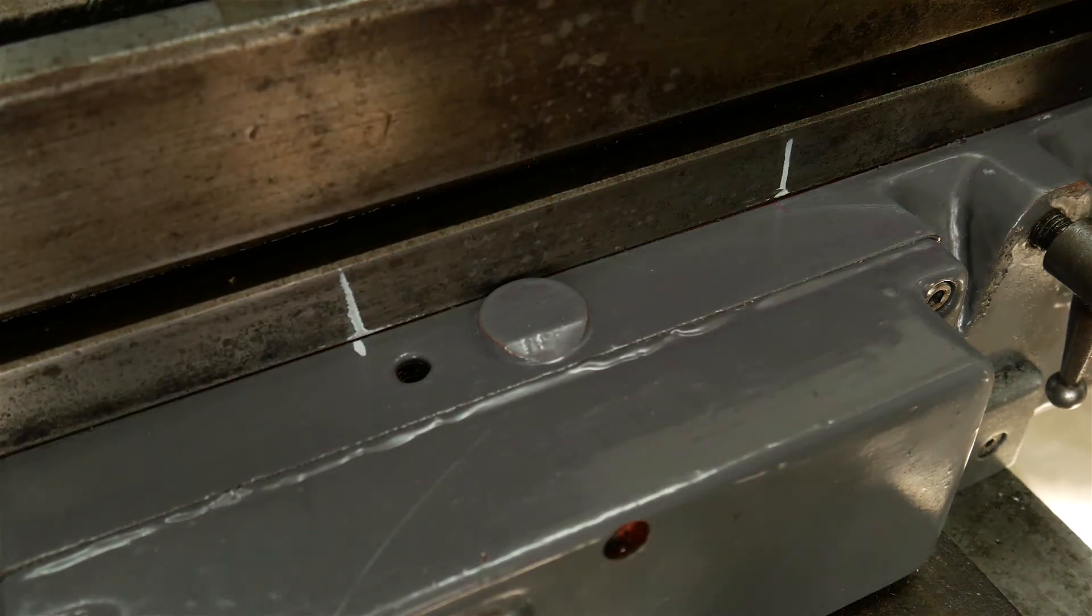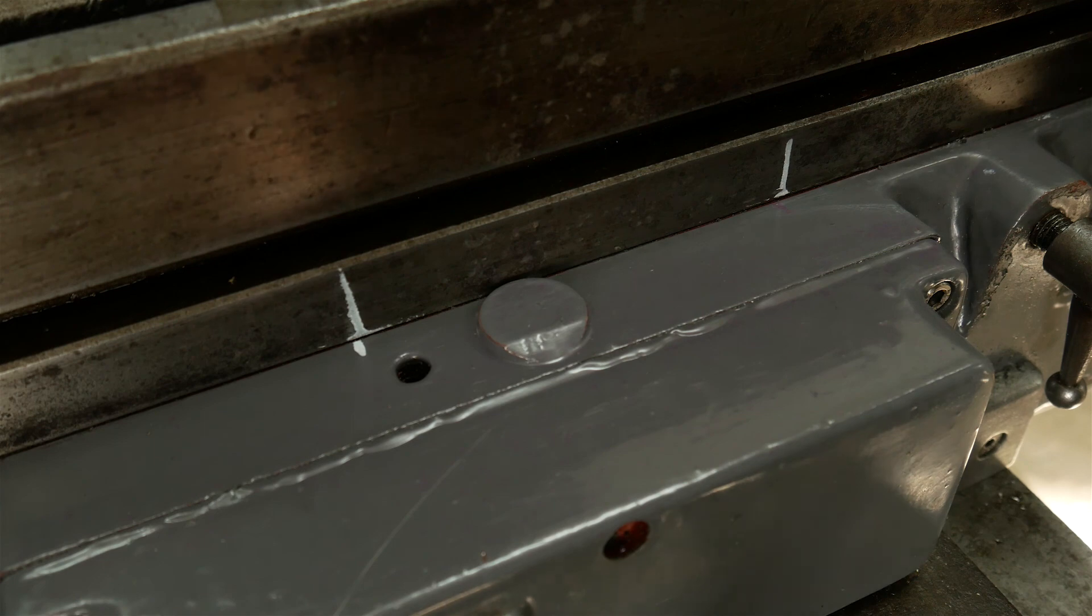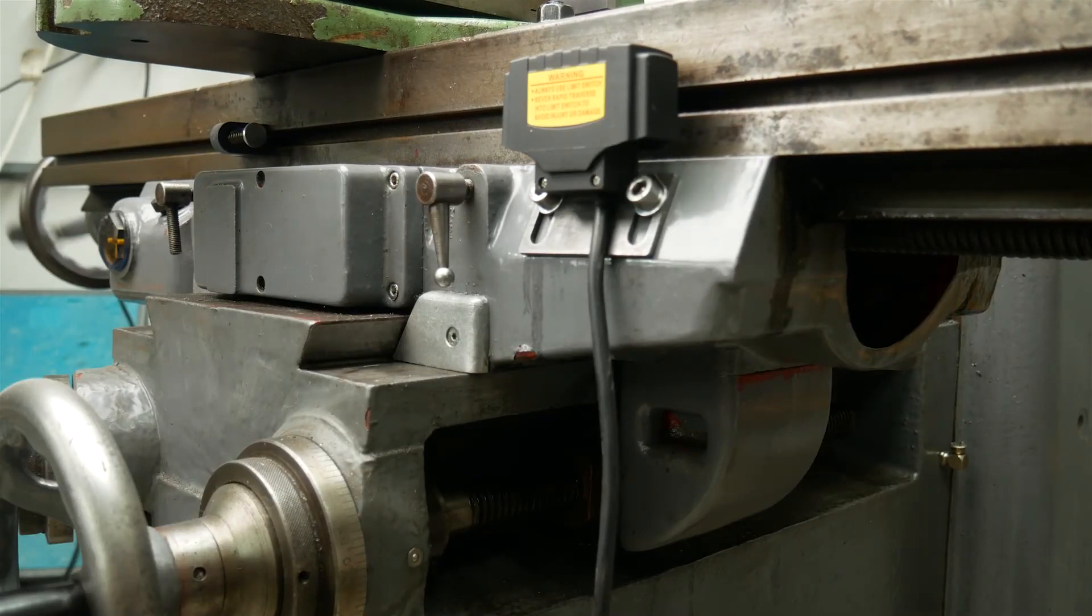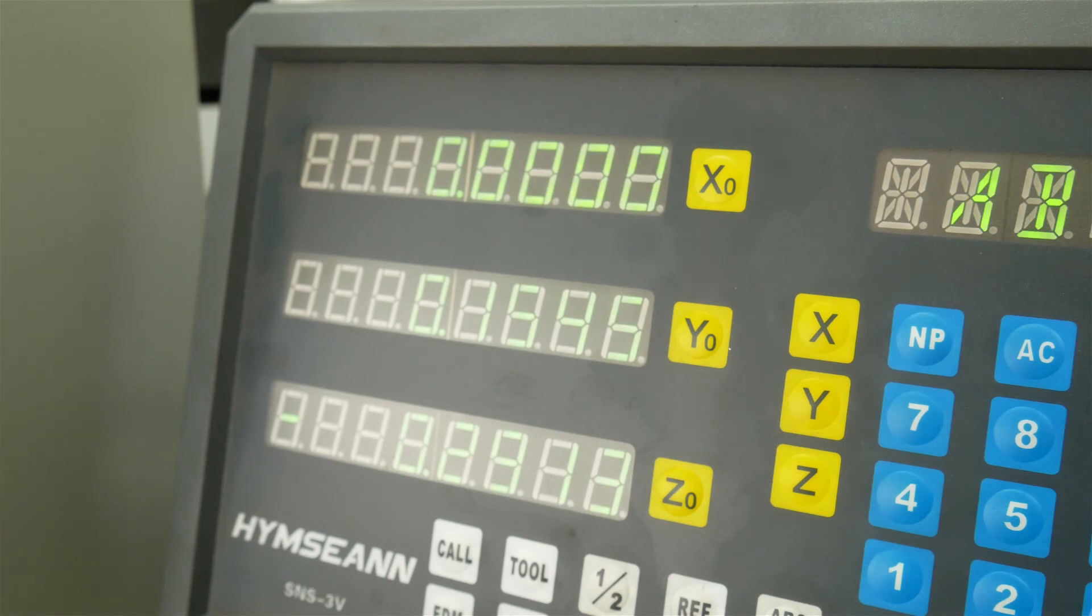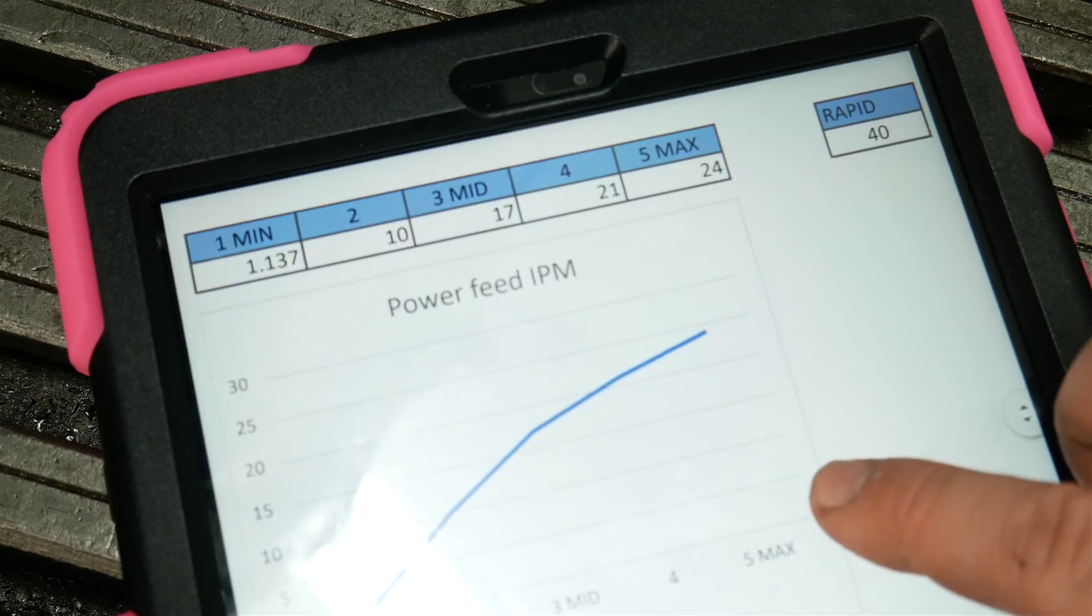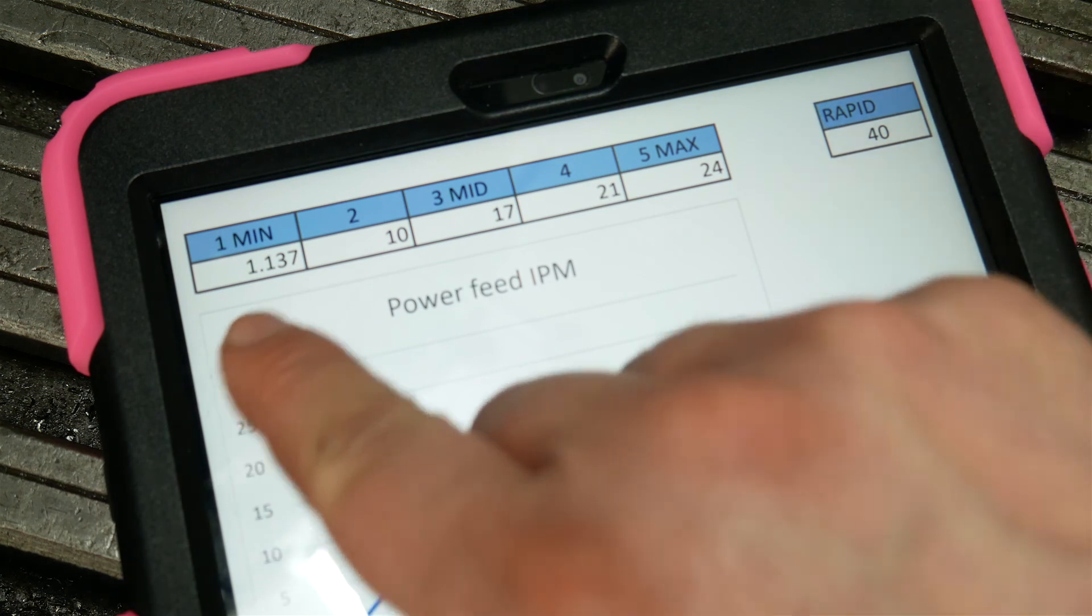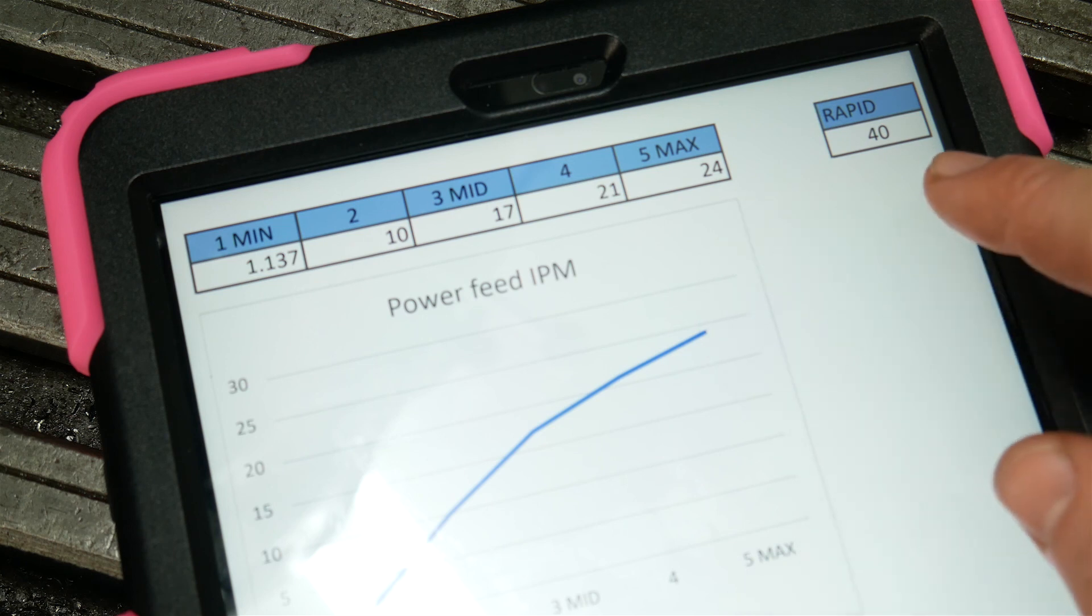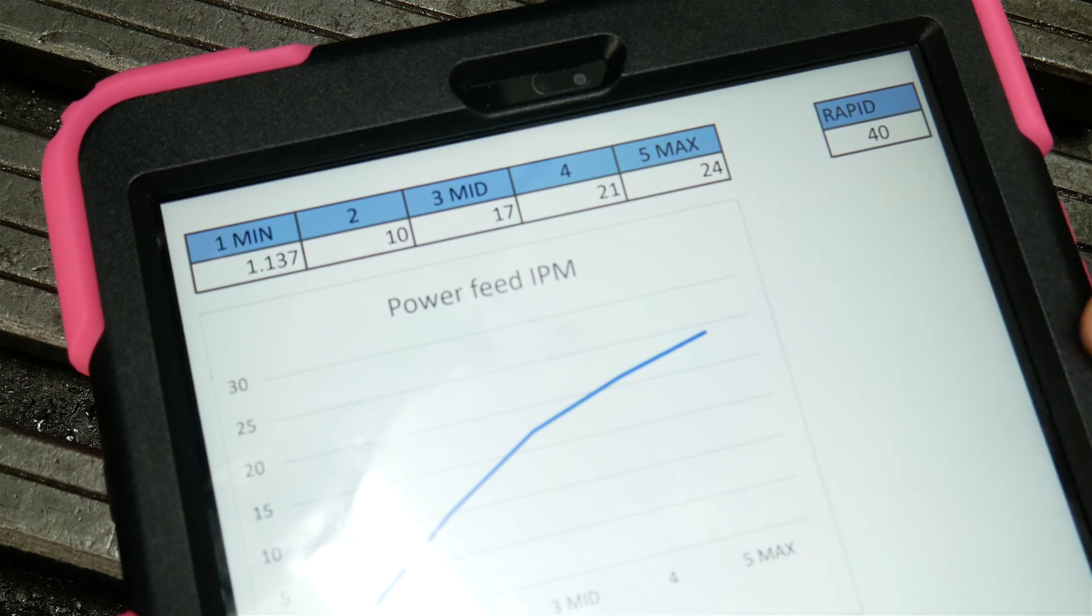Now is a good time to check our actual feed rate. I've marked two positions on the mill table and one on the saddle and I'm timing how long it takes for the table to travel a four inch distance. Of course if you have a DRO you can always just use that. And here are the measurements I've taken. Minimum running speed is 1.137 inches per minute and maximum is 24 inches per minute with the rapid traverse being 40 inches per minute as indicated by the spec. So at some point I'll remove the supplied faceplate from the power feed and fit a custom one with graduations according to our measurements.